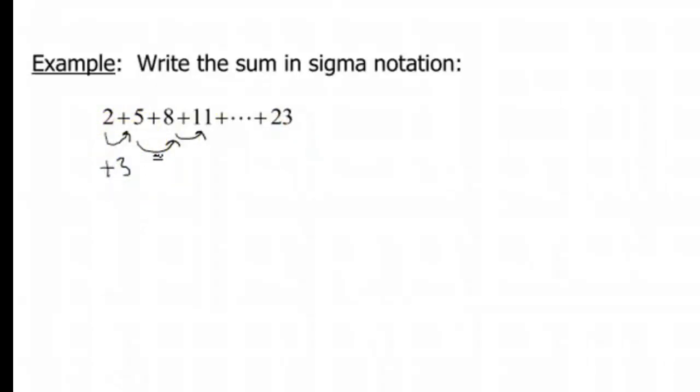So in that case, thinking back to your algebra, that's a linear idea, right? So basically, for this one, this has a slope of 3. So let me write that down, slope of 3.